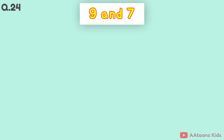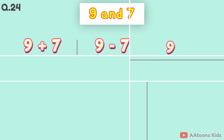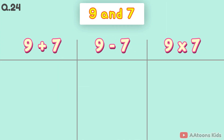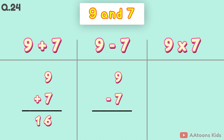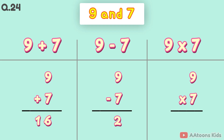The two numbers are 9 and 7. 9 plus 7 is 16. 9 minus 7 is 2. 9 times 7 is 63.